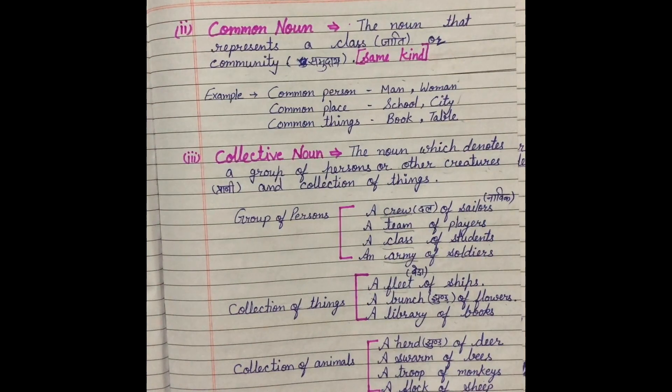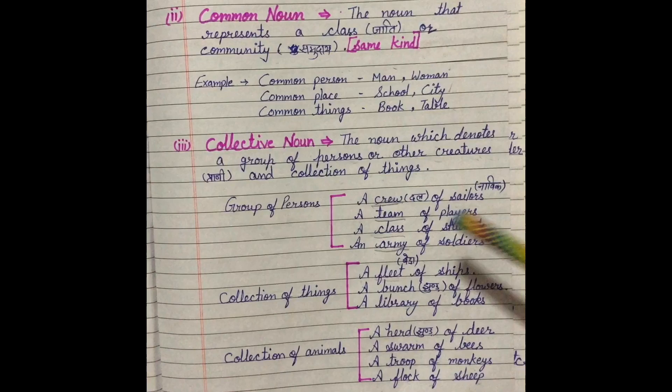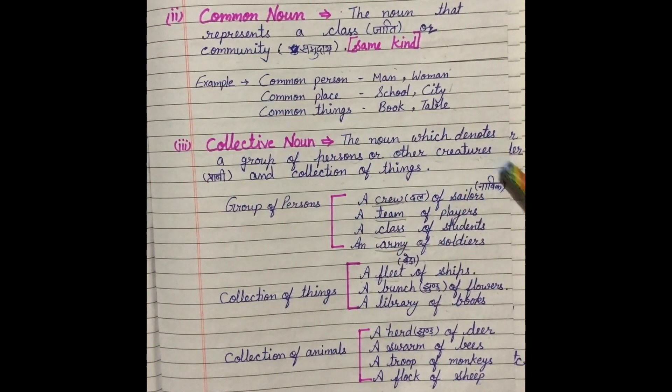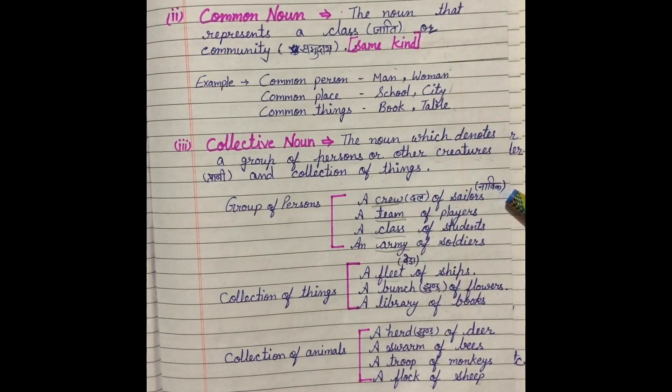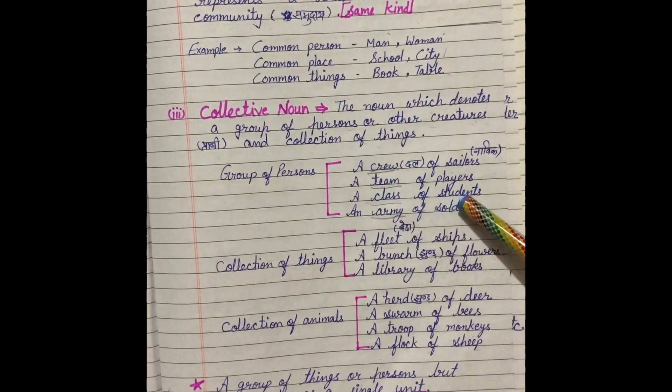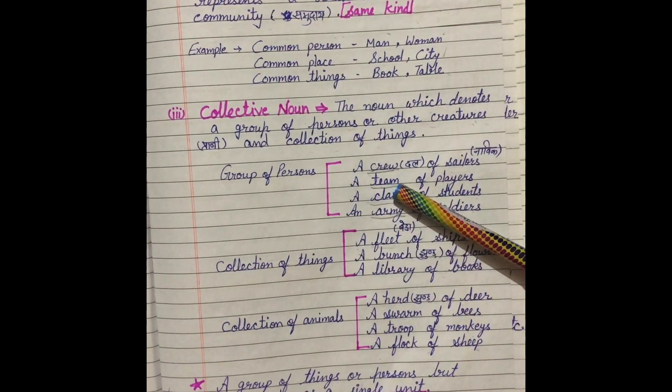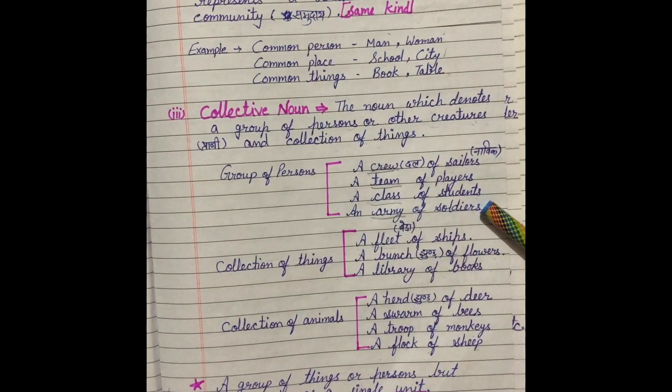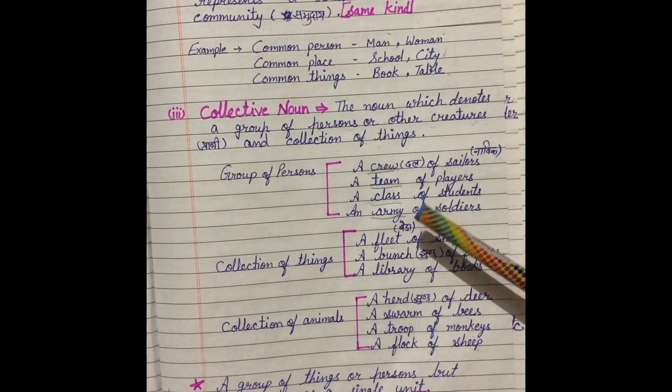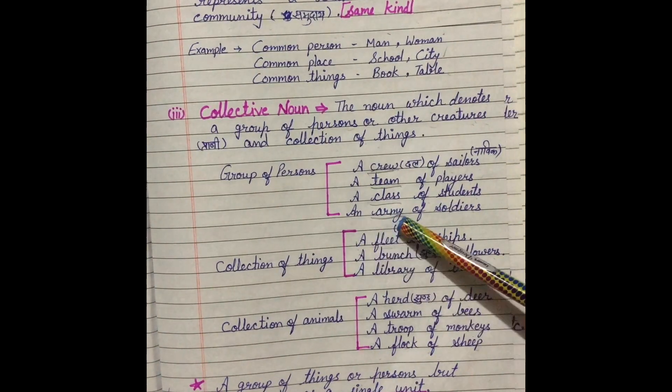Inhe collectively bulaya jata hai kisi single word se. Like group of persons - a crew of sailors. Here sailors ka meaning hota hai navik. Navik ke group ko kya kaha jayega? Crew. A team of players. There are so many players, but we will say only team. A class of students. Here are so many students, but we will say only the class. It means a group of students is called a class. Pore group ko hum kya kehenge? A class. An army of soldiers.